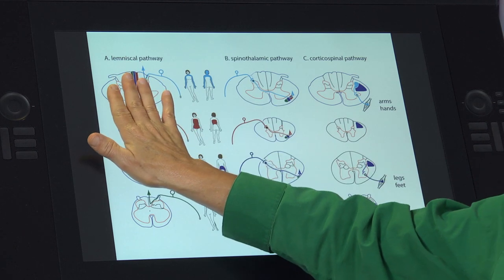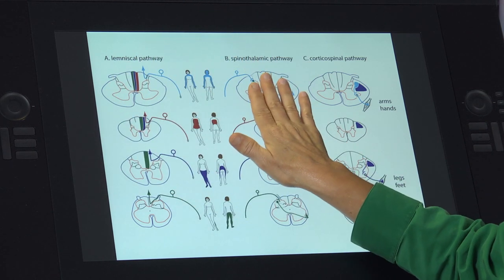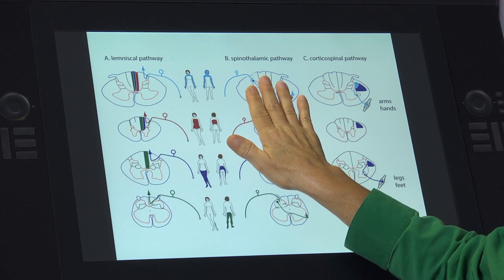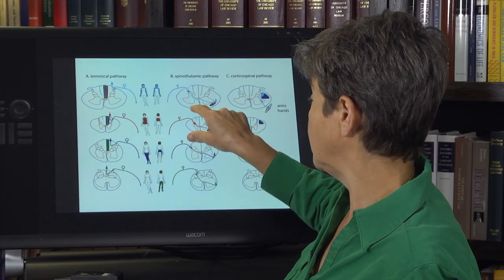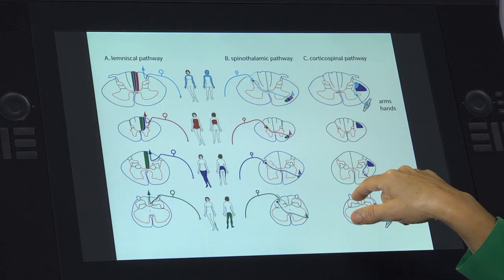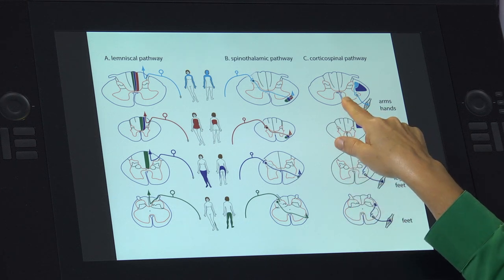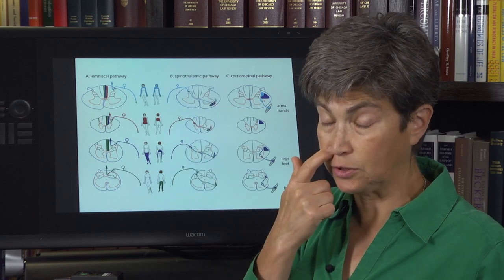So to summarize: light touch, vibration, and proprioception are ipsilateral; pain and temperature are contralateral, with one small wrinkle at the level of the segment; and the corticospinal tract motor information is also ipsilateral — the same as light touch, vibration, and proprioception. Now you have a complete review, and we're going to use that to understand the consequences of some iconic lesions.